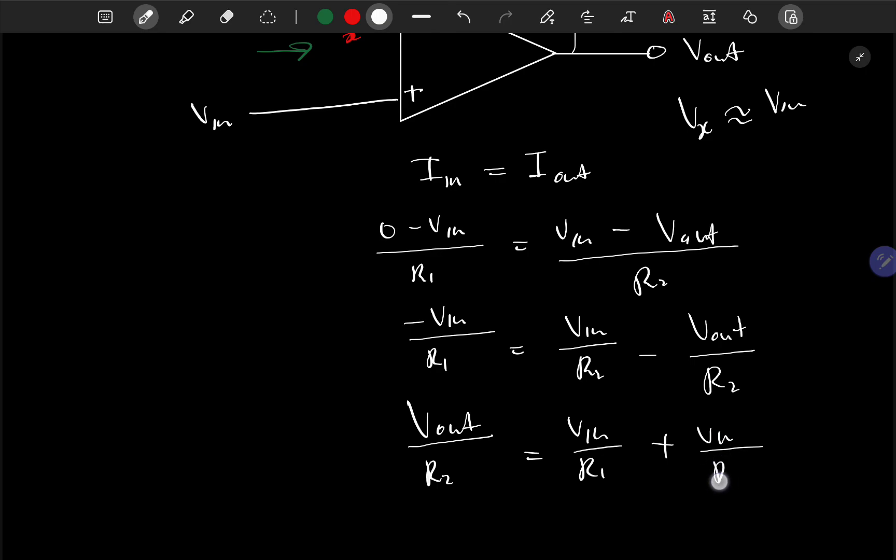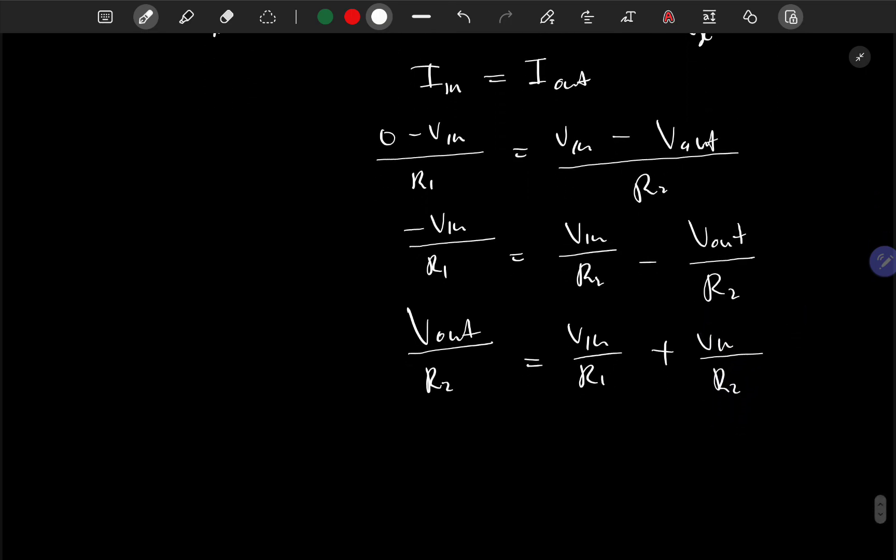Then Vout equals R2 times (Vin/R1 + Vin/R2). Now I can take out a common factor of Vin, giving Vout = R2 × Vin × (1/R1 + 1/R2).